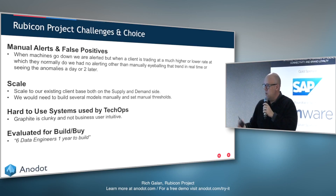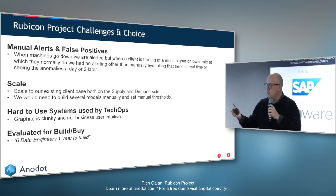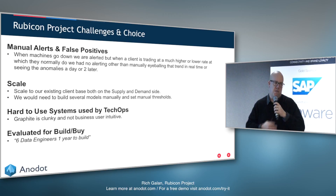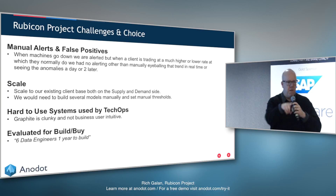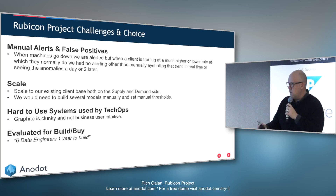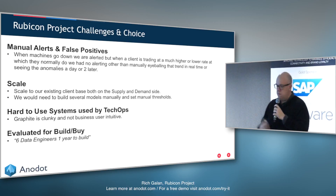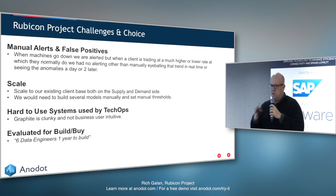What we needed was scale — across all those data centers and all those partners — and something to flag, 'Hey, there's a problem here, go figure out what's happening at the business level.' On the tech side it's on or off, but on the business side, is it trending off by a certain percentage?